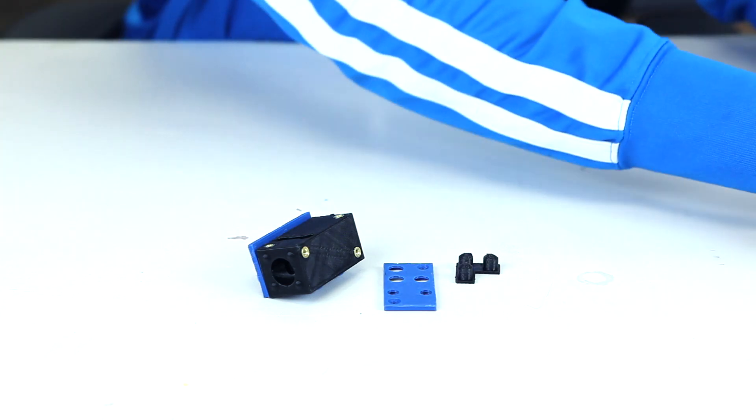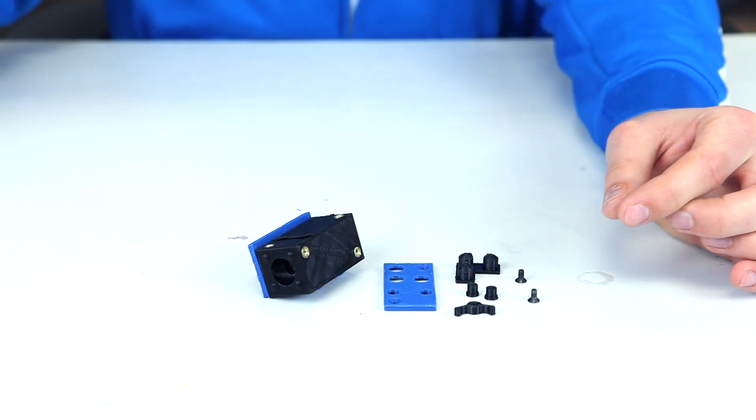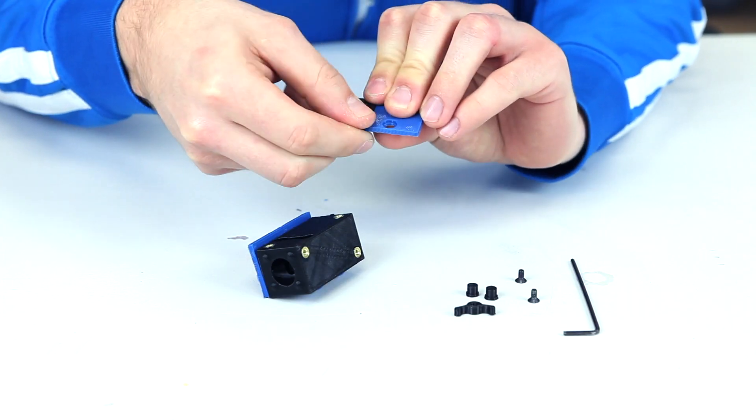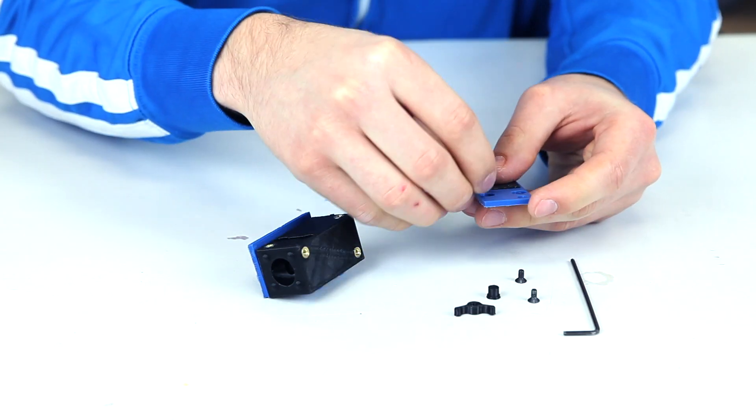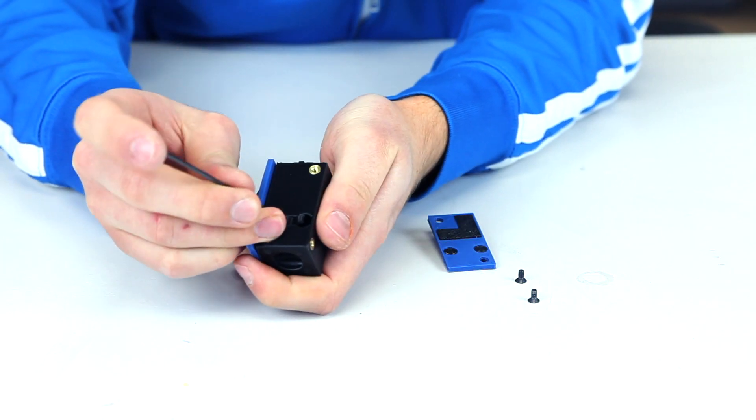For the button side, you'll need the button panel, the soft buttons, the hard buttons, and the cam, along with two screws and an Allen key. Insert the flexible buttons into the panel, and then take the toggle cam. You're going to have to jam this into the main block.